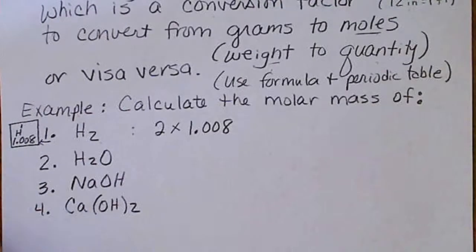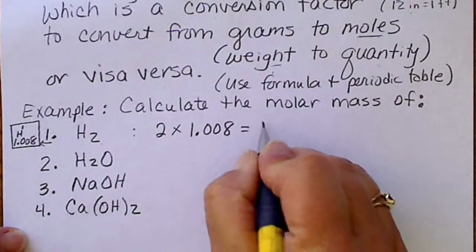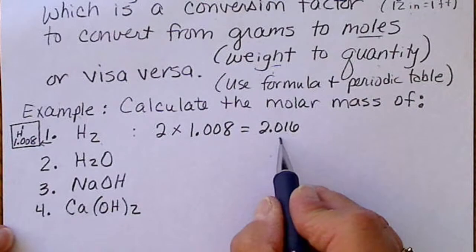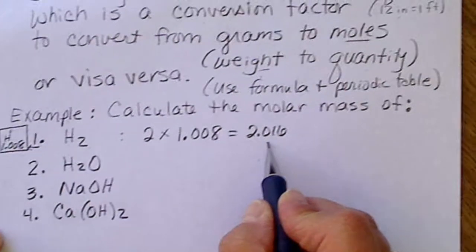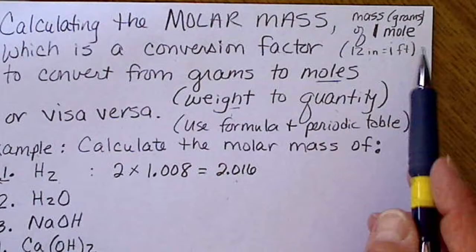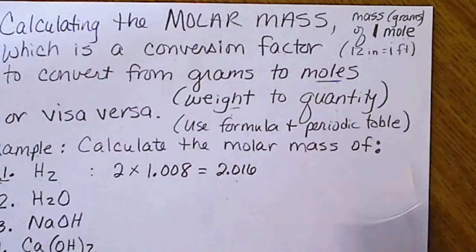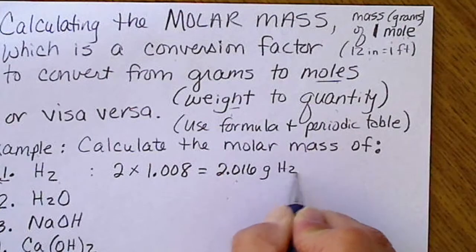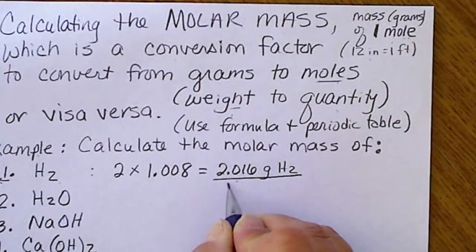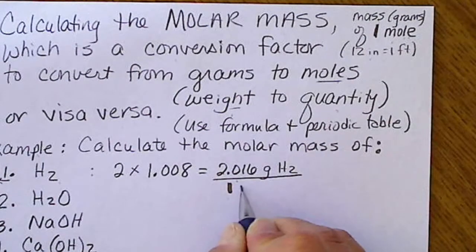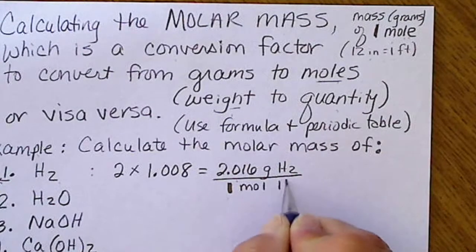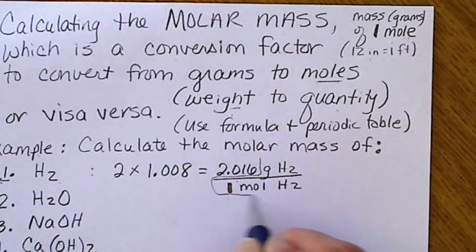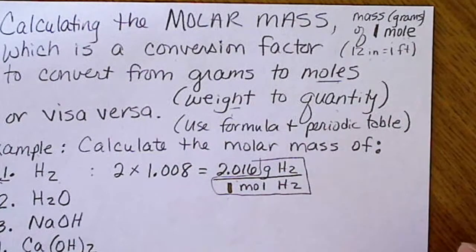That's the number we use. This ends up being 2.016. The number is easy to come up with. What we need to remember is this is the mass in grams of 1 mole. So we want to write grams of H2 per, and I call this the big fat one, mole of H2. All of this is what we have to remember to write.